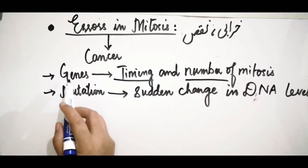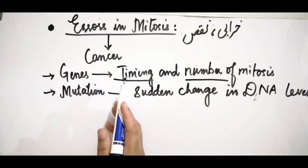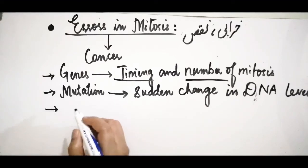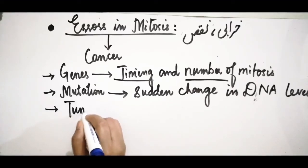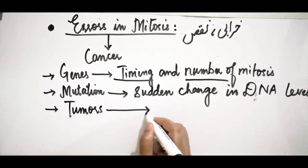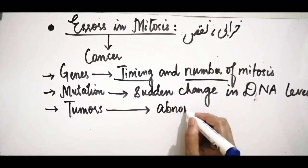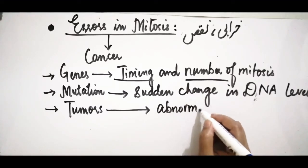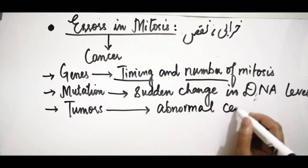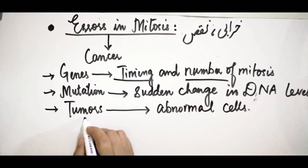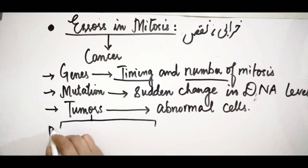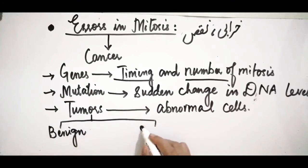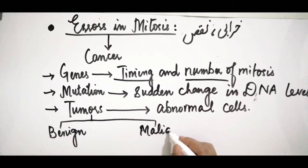Due to mutation, the process of mitosis continues uncontrolled — cells keep dividing — resulting in the growth or production of abnormal cells called tumors. Tumors are abnormal cells produced due to the uncontrolled division of cells. These tumors are of two types: benign tumors and malignant tumors.